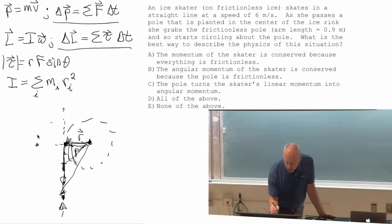What I want to do is go back here and make the claim that since there's no net torque on her, there is no change in her angular momentum, so she had the same angular momentum before she grabbed the pole as after she grabbed the pole.